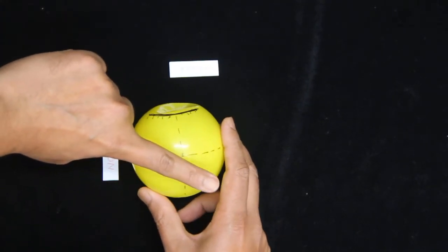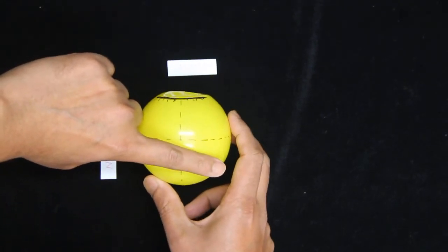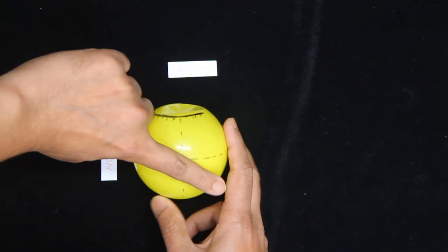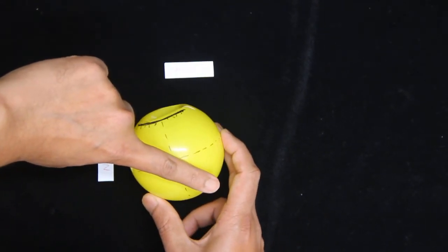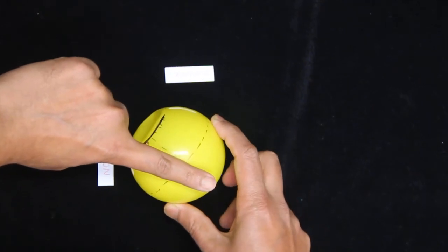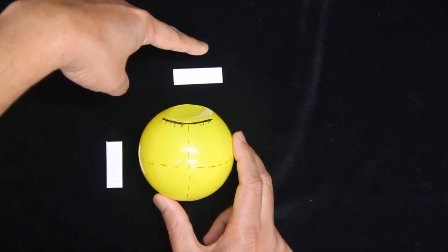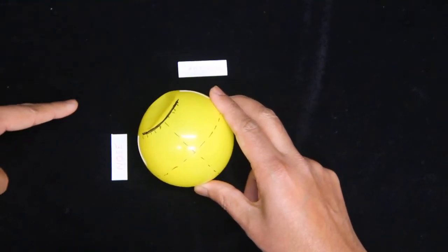That means the superior oblique can abduct, he can intort, he can make the eyeball look down only when the eyeball is facing inside. That's what we say in clinical testing. You ask the patient to see inside, adduct the eyeball, and then look down, thereby we are testing the superior oblique.